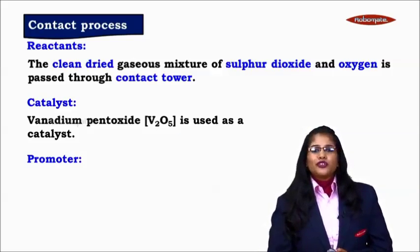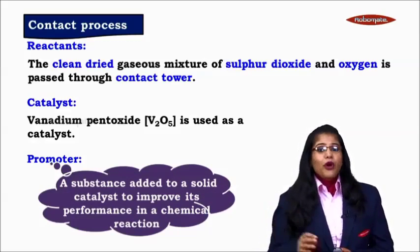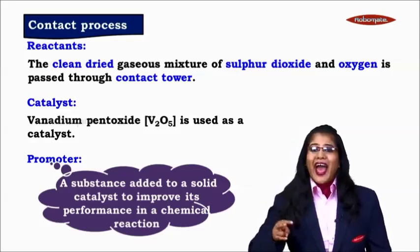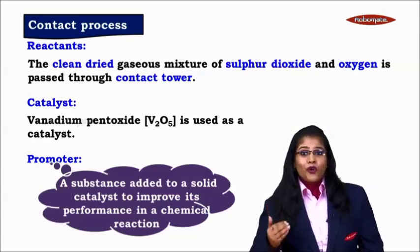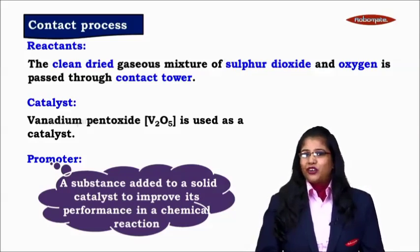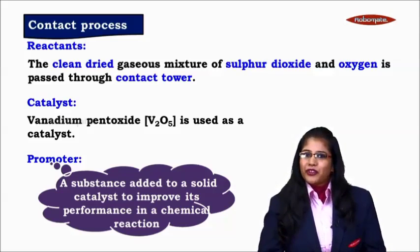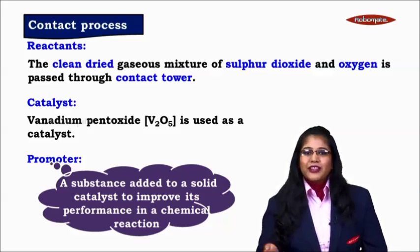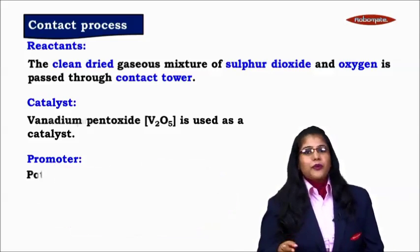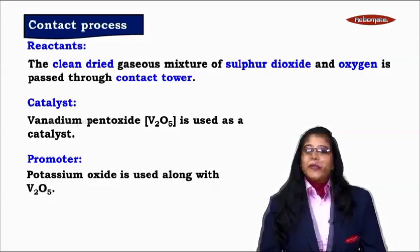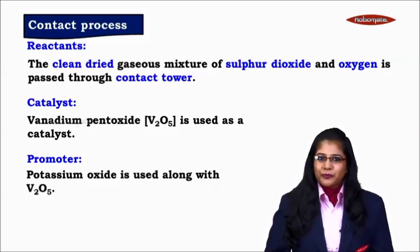The promoter which is used here — now what exactly is a promoter? A promoter is a substance which is added to a solid catalyst to improve its performance in a chemical reaction. The catalyst increases the speed of the reaction, and the promoter would further increase the speed of the reaction. The promoter used here is potassium oxide along with vanadium pentoxide.